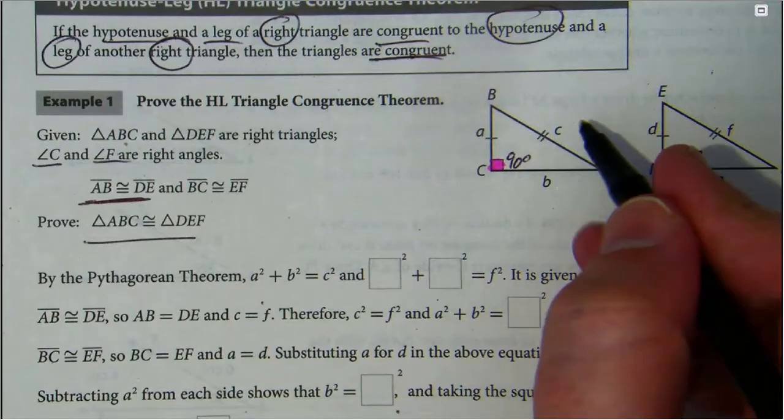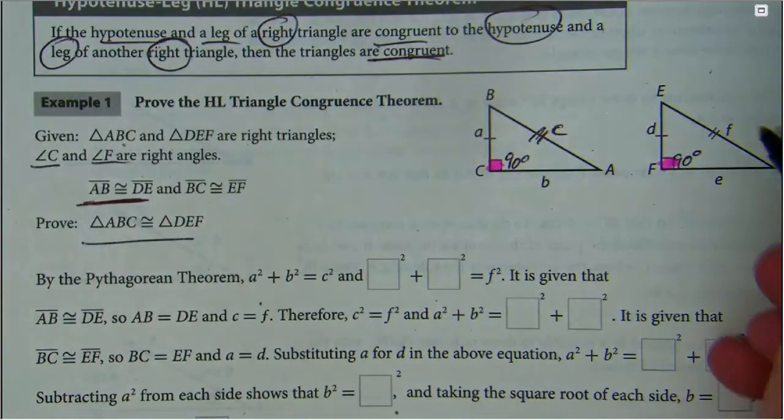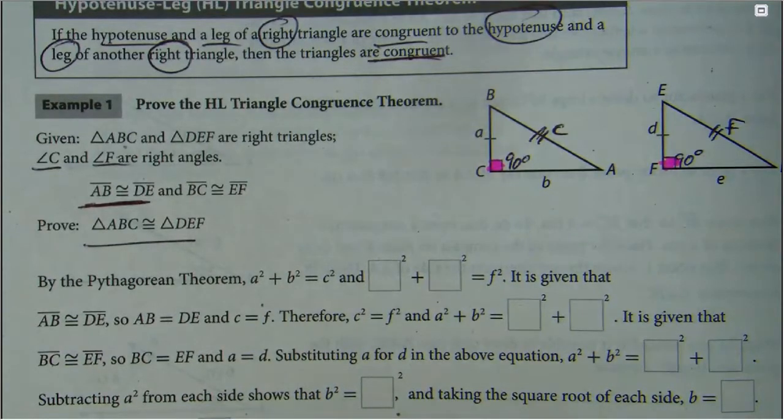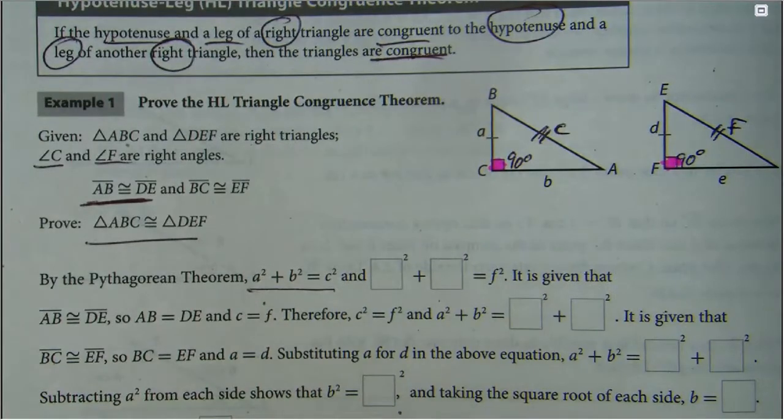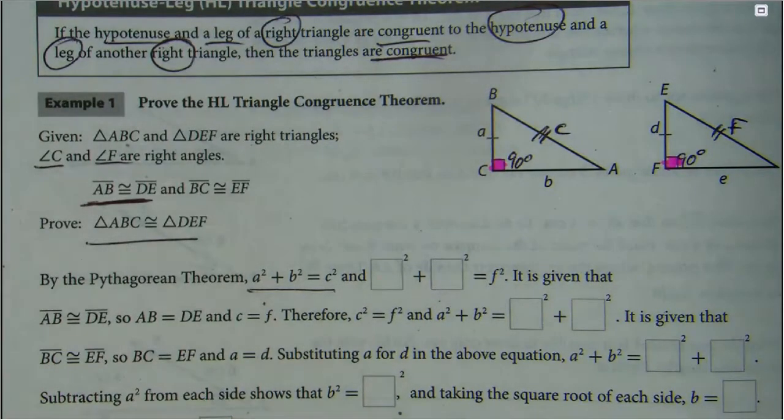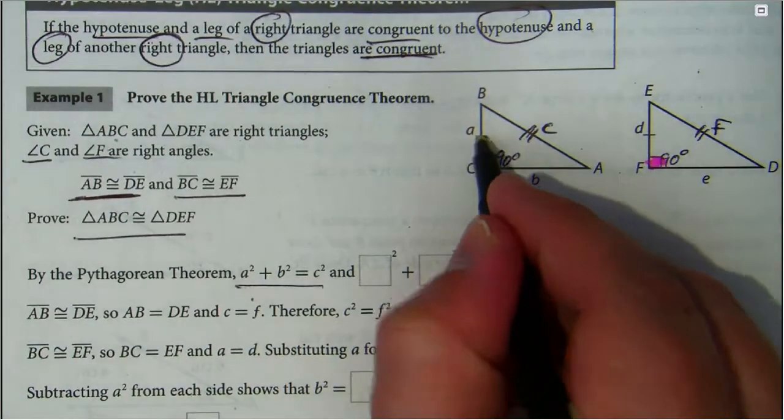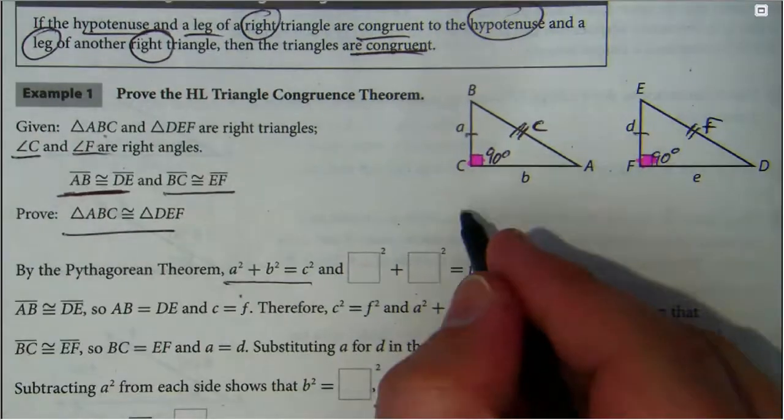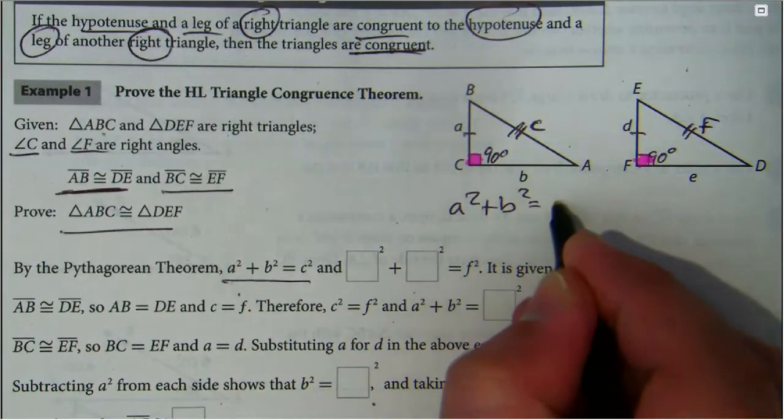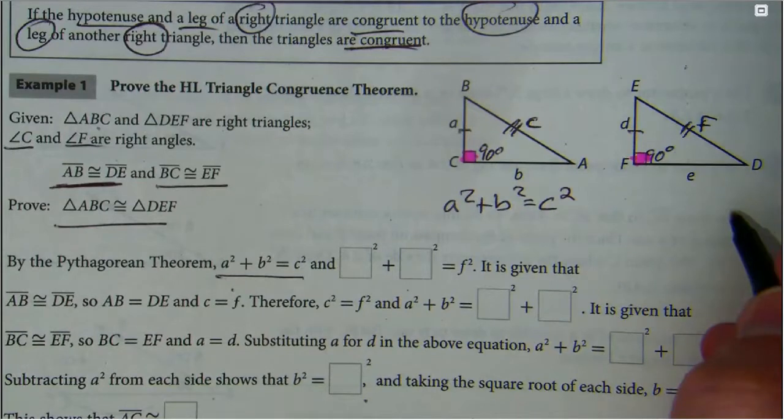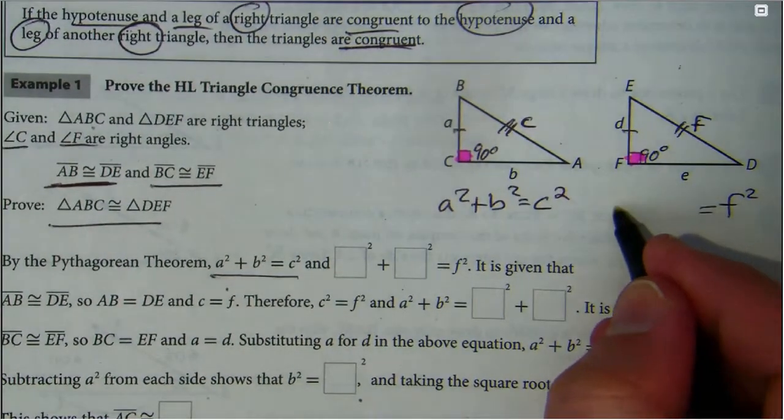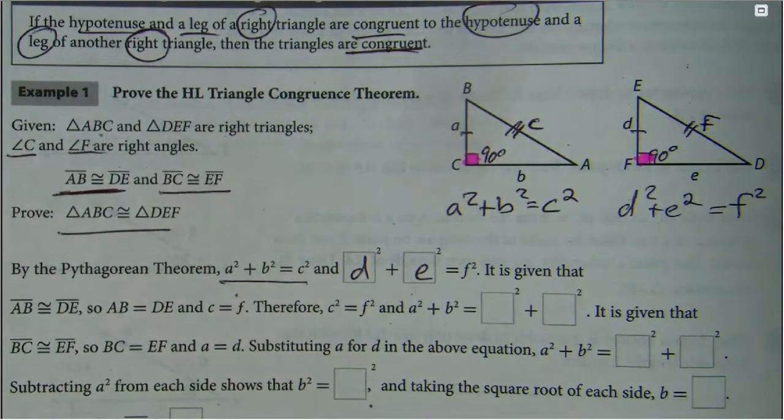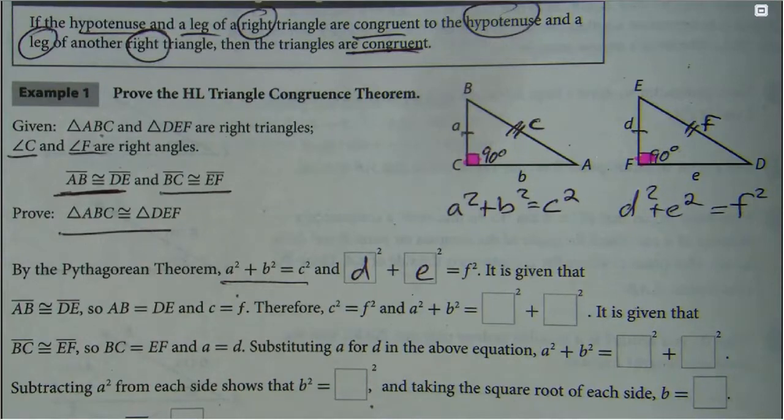What else do they give us? Notice how they marked AB as c and they marked DE as f, so they're labeling the sides. Why do they do that? Because it looks like they're setting up Pythagorean theorem. And lastly they gave us BC to EF. They labeled that guy a. They're just getting ready for Pythagorean theorem. We know Pythagorean theorem is a squared plus b squared equals c squared.